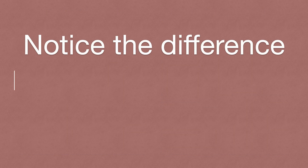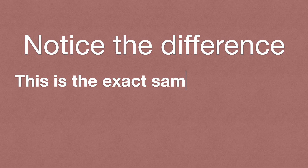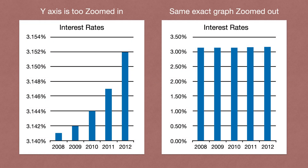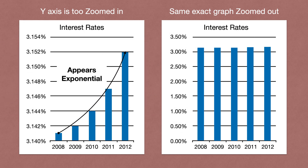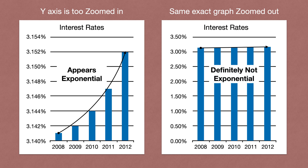Notice the difference because it's the exact same information. In the zoomed-in version on the left, it appears to be an exponential increase from 2008 to 2012. But on the right, we can clearly see it is definitely not exponential — it's actually a very, very small increase.